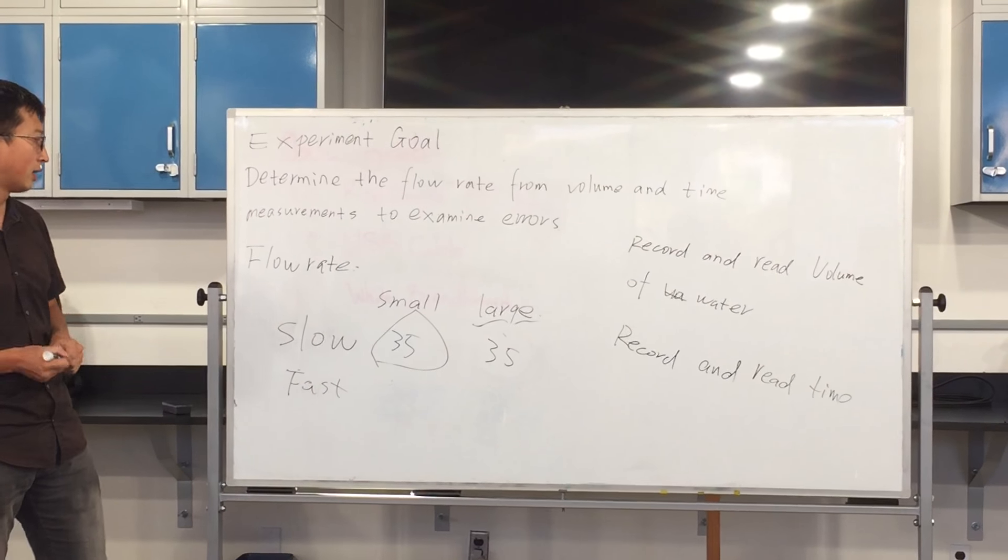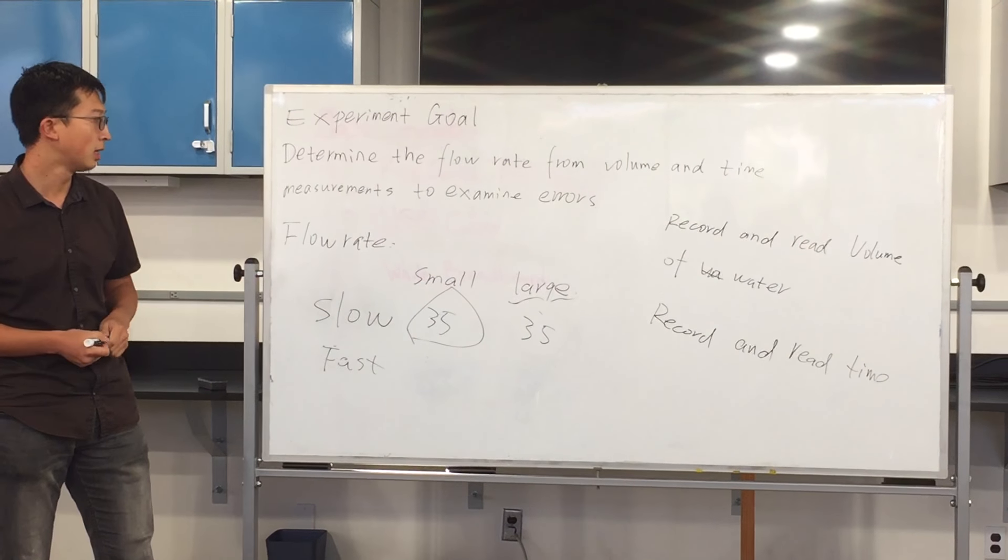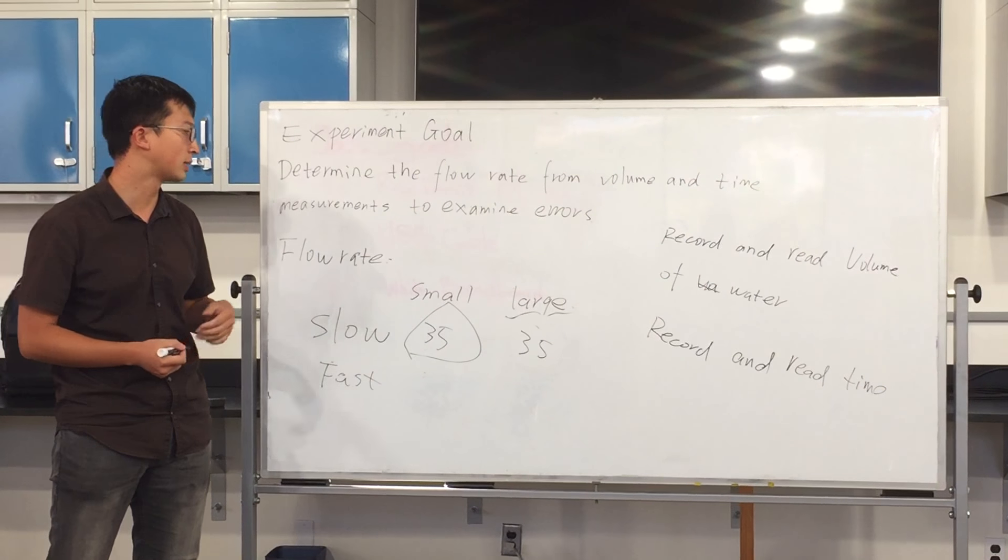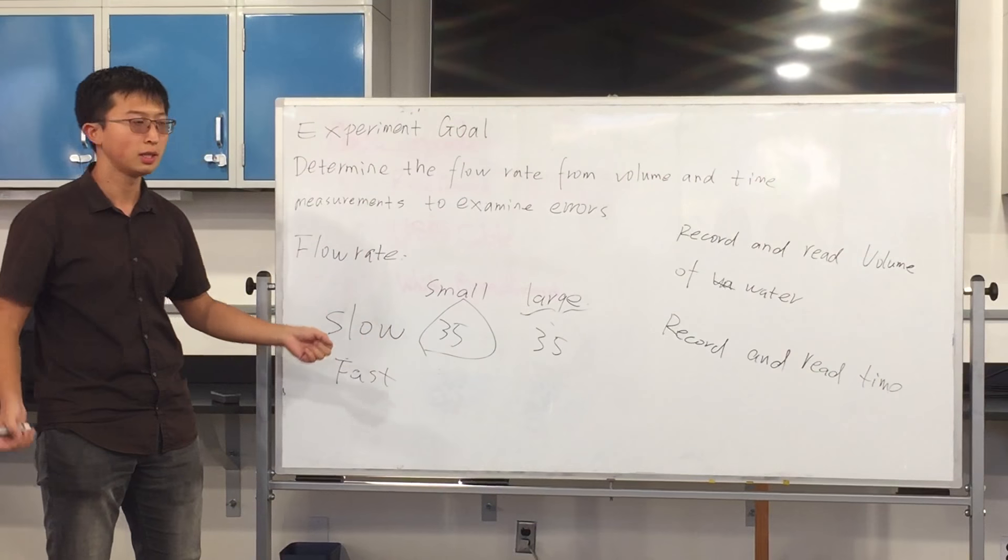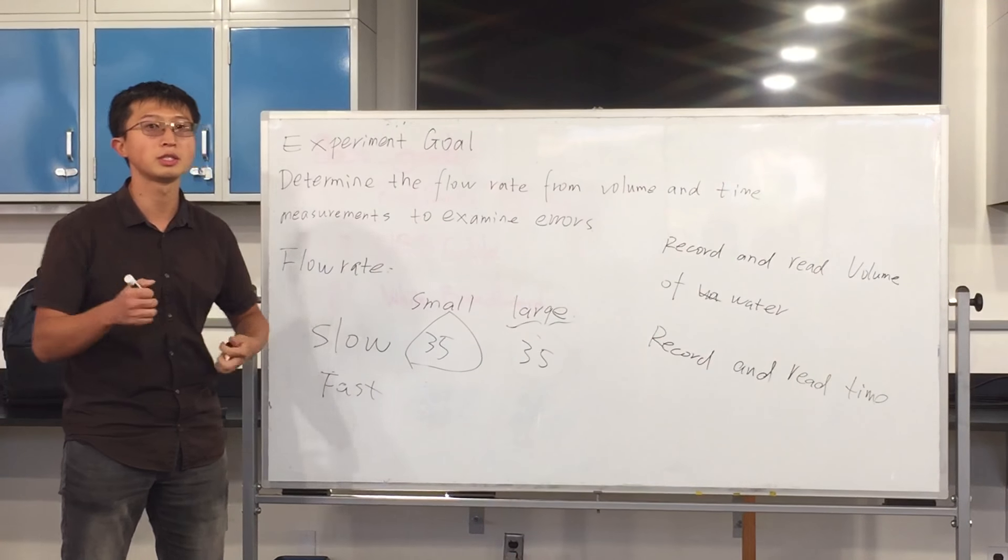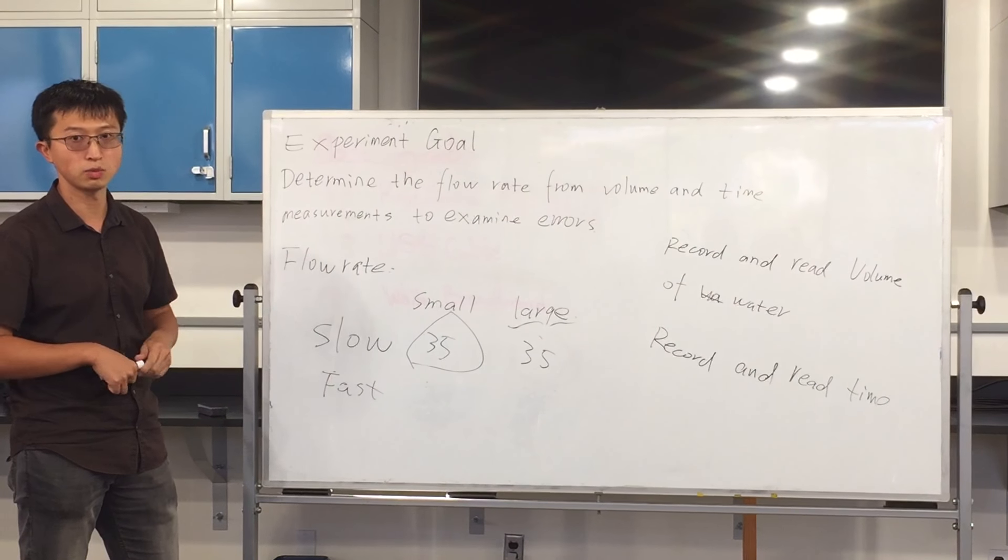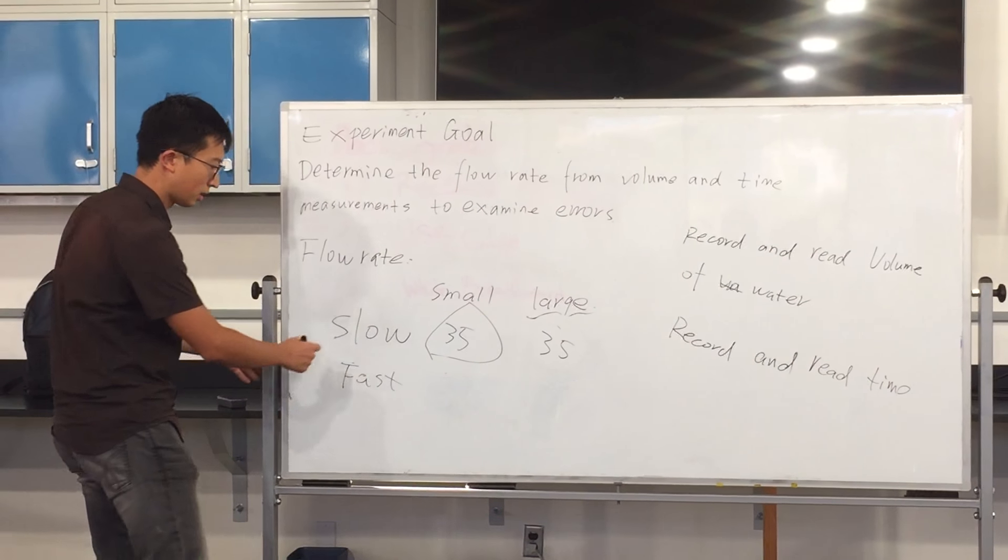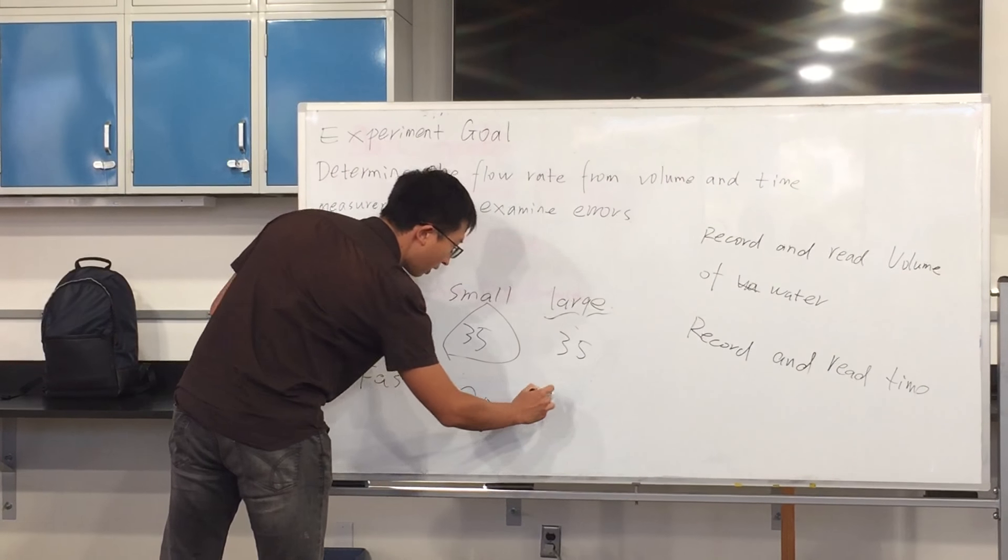At these two different flow rates, we are going to conduct experiments with the small graduate cylinder and large graduate cylinder. Each set of experiments will be repeated 35 times. I'm presenting for the fast flow rate 25.